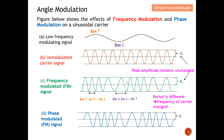From here you can conclude that regardless of the frequency change, the amplitude remains unchanged. The peak amplitude remains the same as the carrier. For a frequency modulated signal, the period is different — it depends on the frequency of the carrier changing according to the modulating signal.